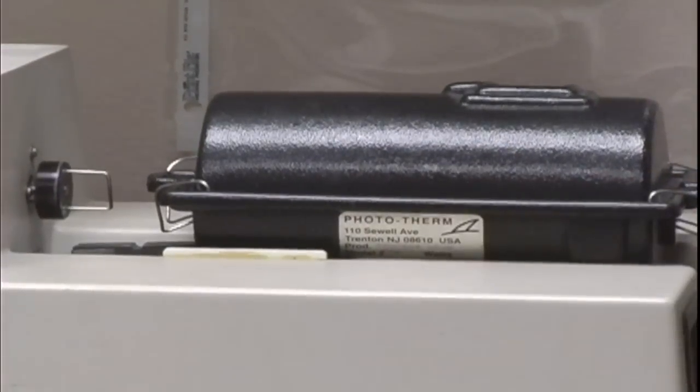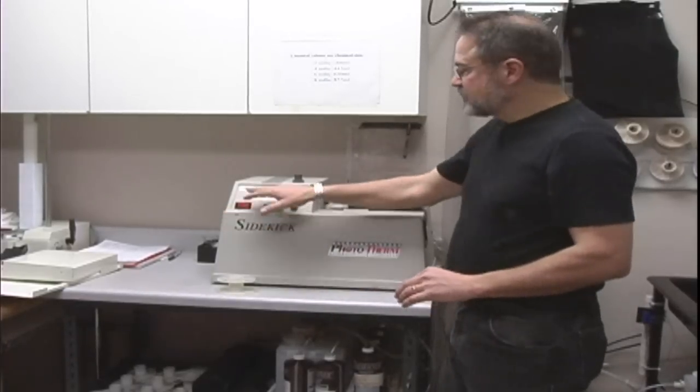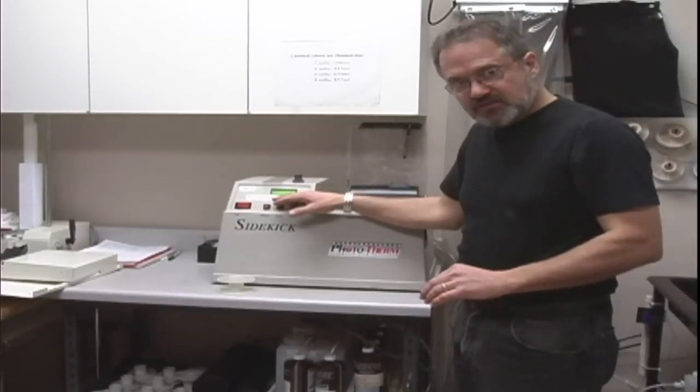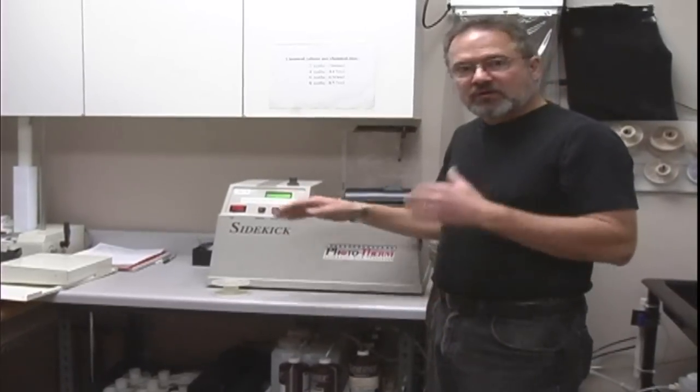From that point forward, we just turn on the machine, we select our process of E6, and it will go through our development stage.